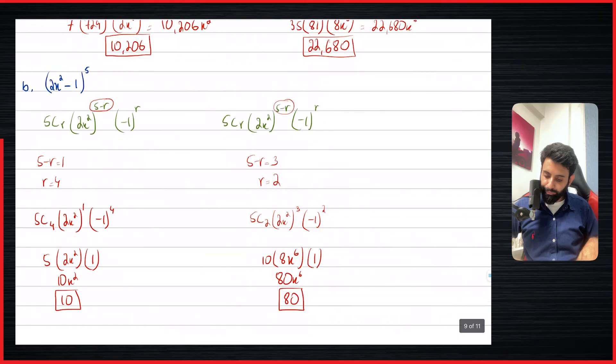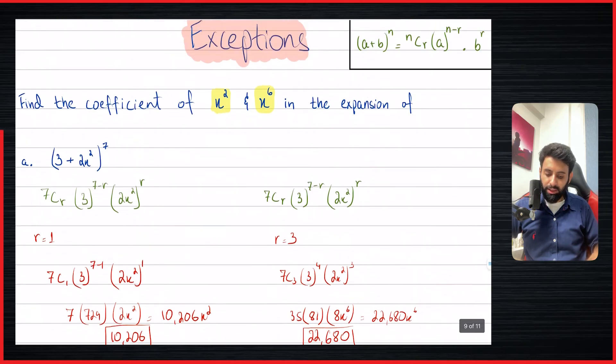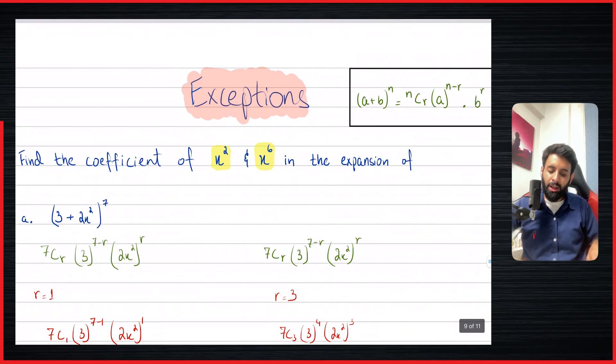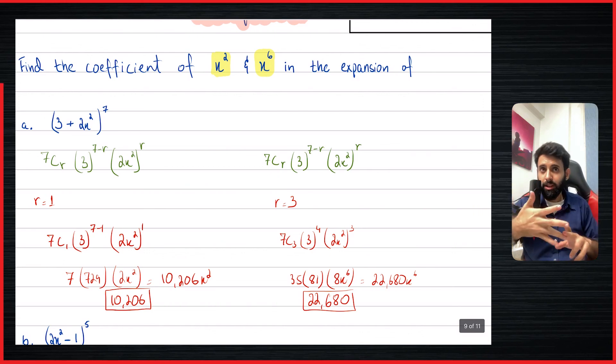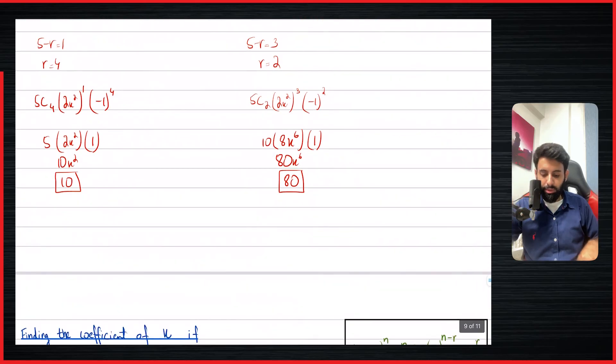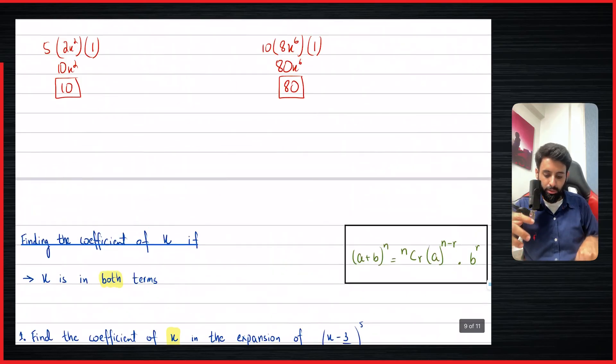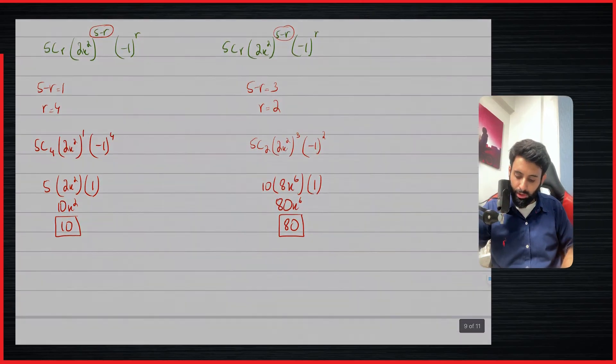And there you go, this is how this is done. If you really think about the way that we have done this using this method, you can figure out any coefficient of x raised to any power. You don't really have to memorize what happens when x is in the first term or the second term. There's another scenario coming — when x is in both terms — and we're just going to be extending this concept into that also. Anyway, that's it for this video. I hope you guys understood and enjoyed this. I'll see you guys in the next video. Until then, take care. Bye-bye.